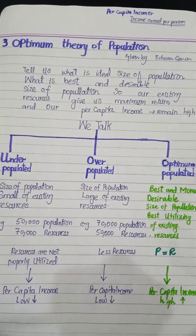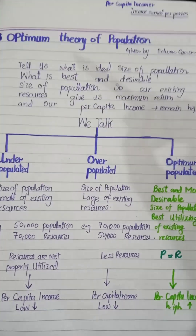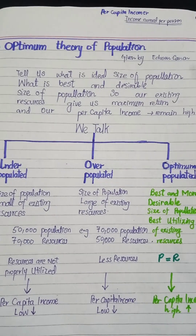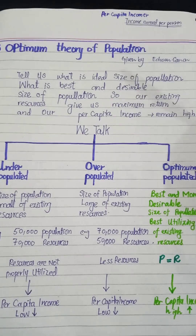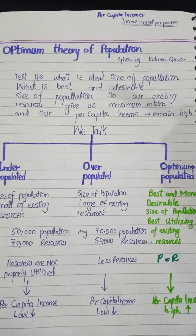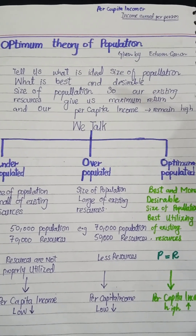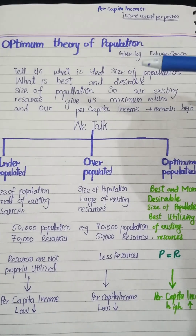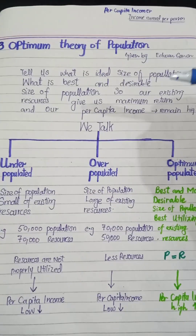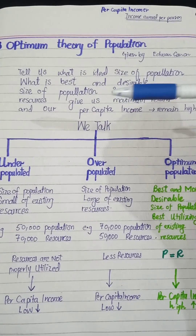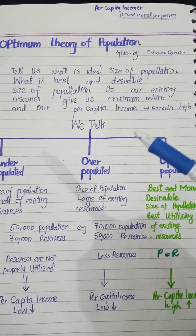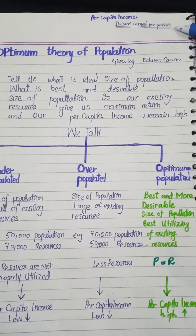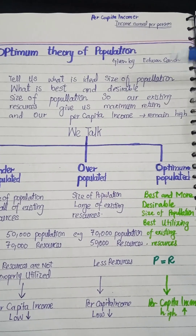Now let's talk about the third theory of population — the optimum theory of population, invented and described by Edwin Cannon. This theory asks: what is the ideal size of population? The ideal or optimum population is the best and most desirable size of population, where our existing resources give us a maximum return and our per capita income remains high.